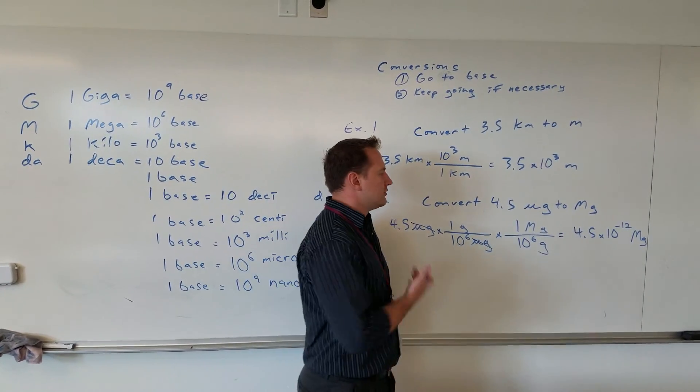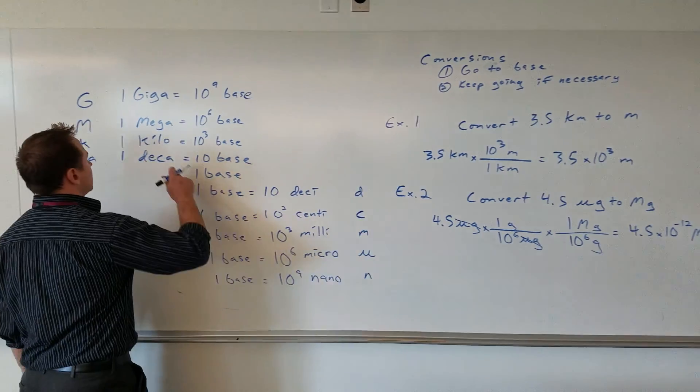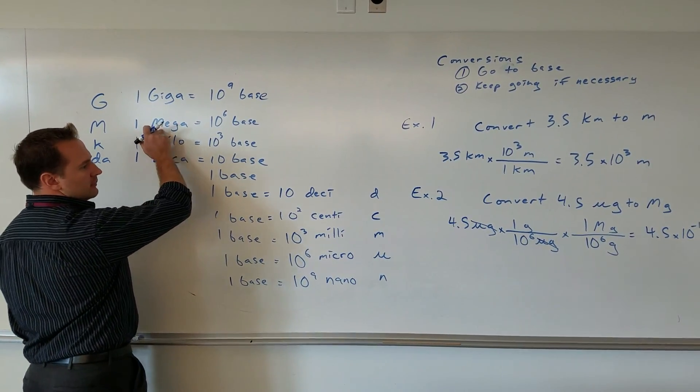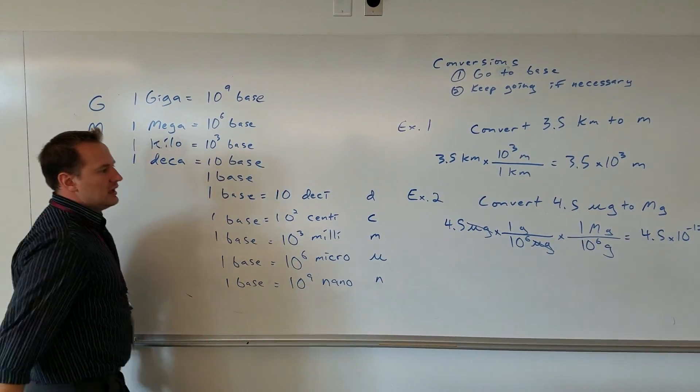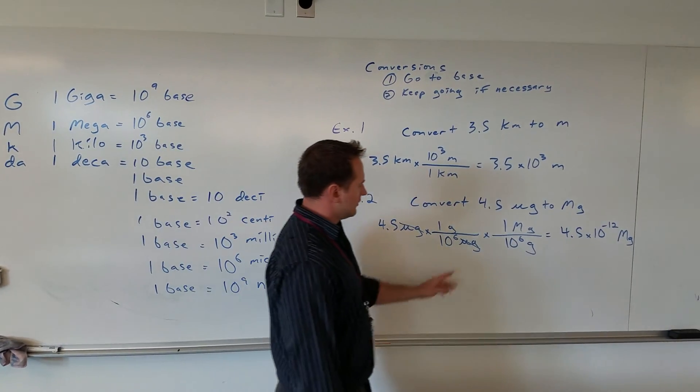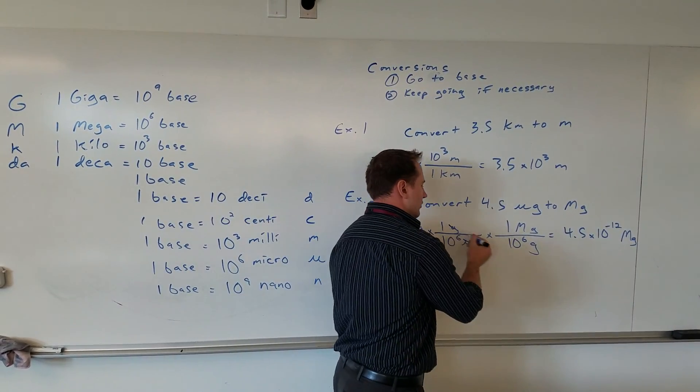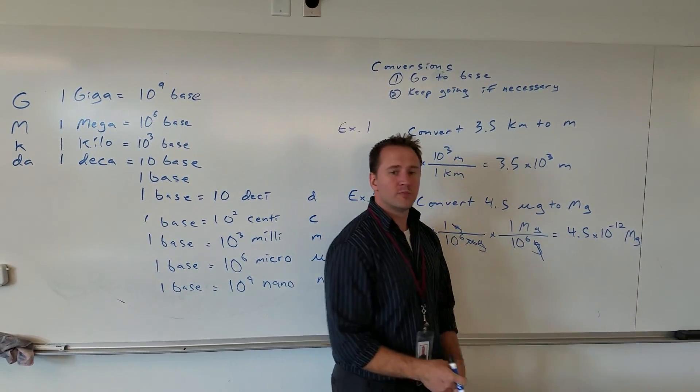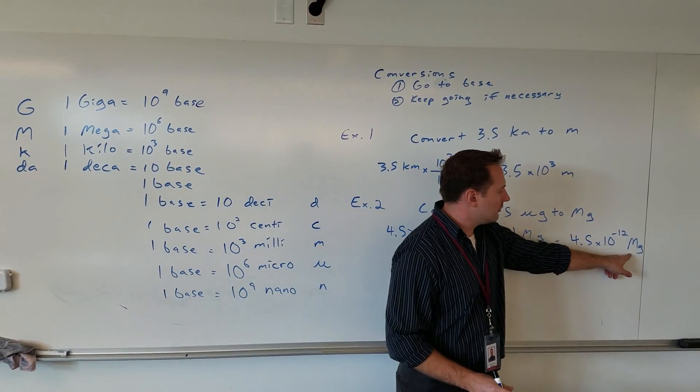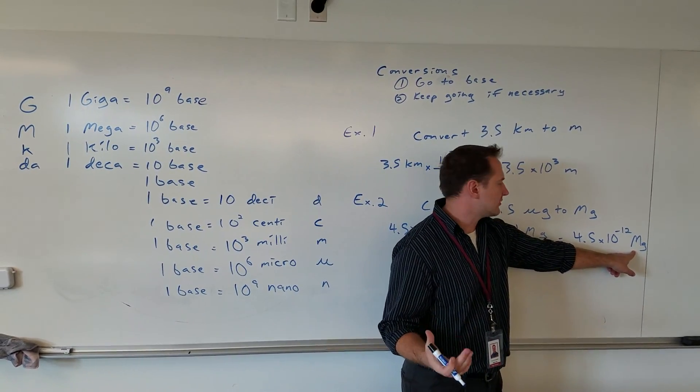I can then relate to megagrams using the conversion factor. In one megagram, there are a million grams. I set up the conversion factor, grams goes on the bottom so it cancels out, and then the units left at the end are megagrams, which I'm using to describe this answer.